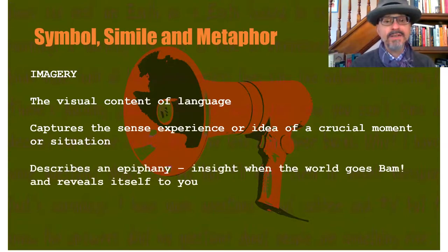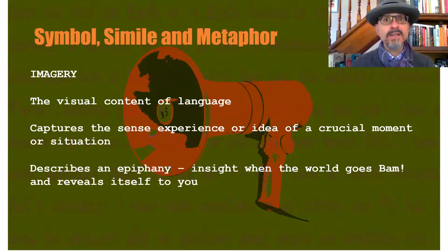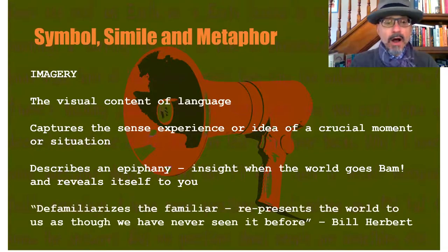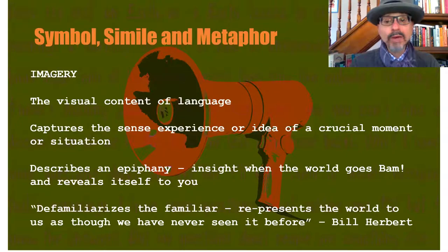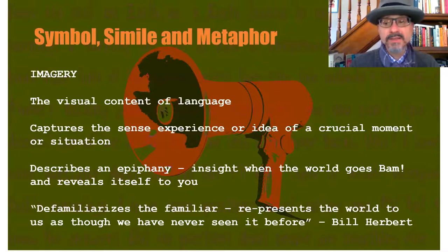In the form of an epiphany — this kind of sudden insight when the world goes bam and reveals itself to you. It's almost like a Zen Satori kind of element. And the American novelist William S. Burroughs calls it "the naked lunch" — that moment where everything, the entire world, is present for you at the end of your fork. Optimally, not only does it take the unfamiliar and make it familiar, it also defamiliarizes what is familiar. It re-presents the world to us as we had never seen it before, and I think that's what a good image can really do — that's Bill Herbert, from a book in the resources list.